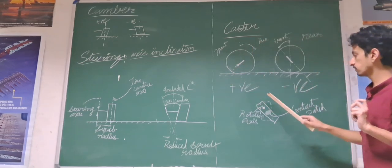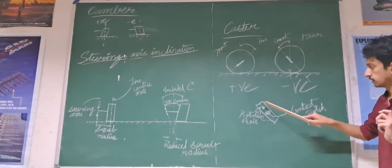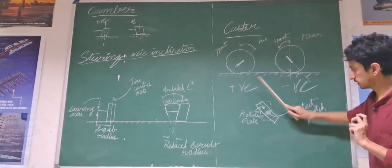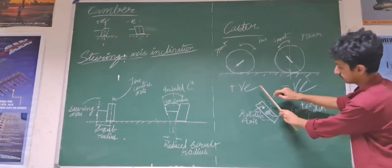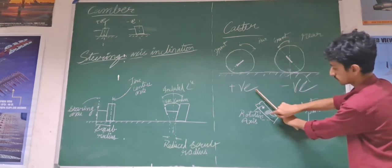Due to this, we can see that whenever you are turning your wheel, this shows the straight wheel. Now, when you turn it a little, at that time, the steering axis is actually more forward than the contact part.